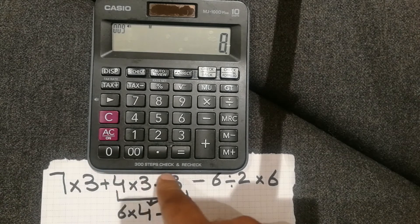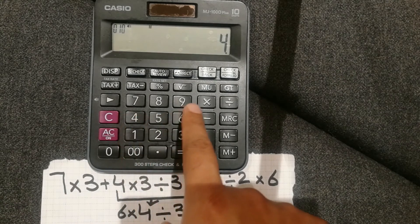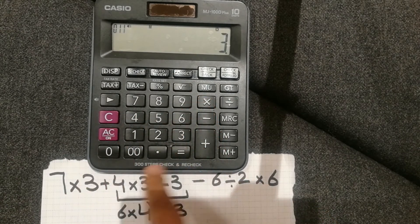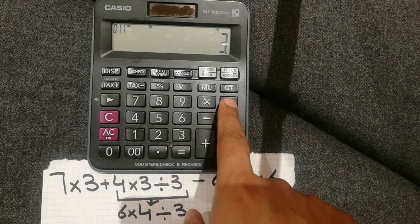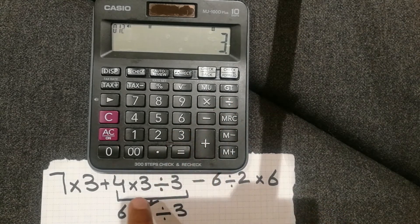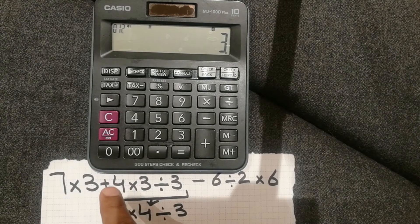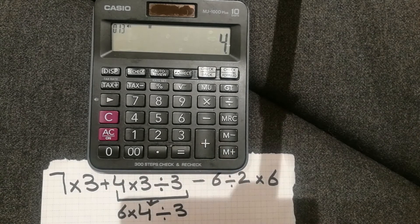Because the wrong equation is removed, we move on to the correct step, which is 4 multiplied by 3 divided by 3. Because this is with a plus sign, I press M plus.